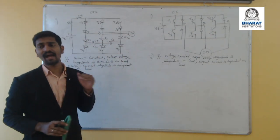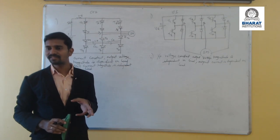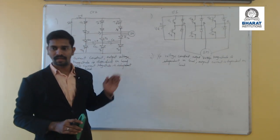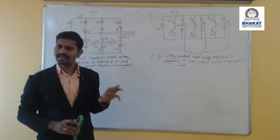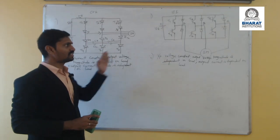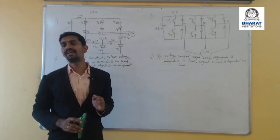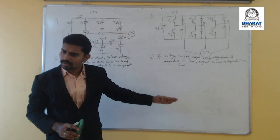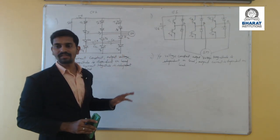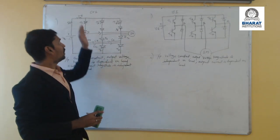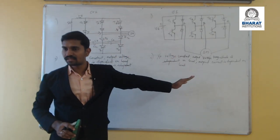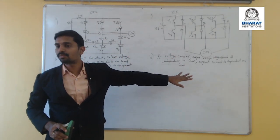Today we will discuss the comparison between voltage source inverters and current source inverters. The general difference between VSI and CSI can be identified by looking at the circuit diagram itself. In current source inverters, we have input inductance, but in voltage source inverters, we do not have any input inductance.